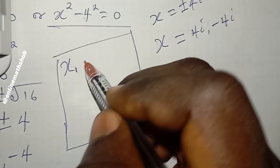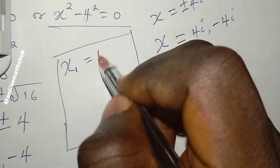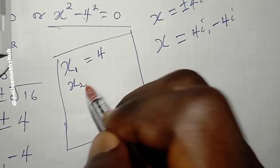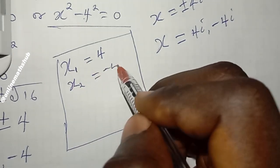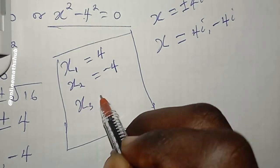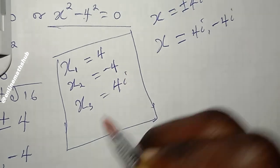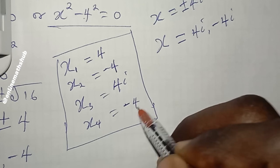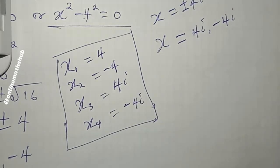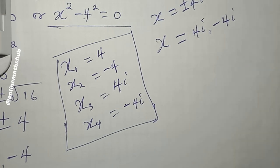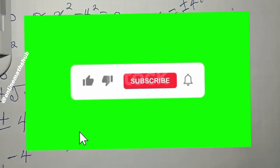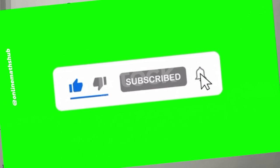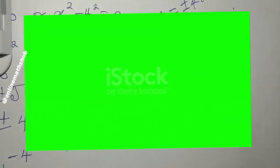Putting everything together, the four roots are: x₁ equals positive 4, x₂ equals negative 4, x₃ equals positive 4i, and x₄ equals negative 4i. These are both the real and complex values of x that satisfy the equation. Thank you so much for watching — if you enjoyed this video, don't forget to like, subscribe, and share with your friends. See you in the next video!